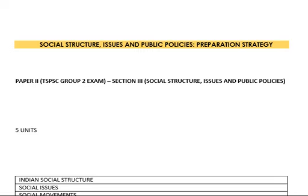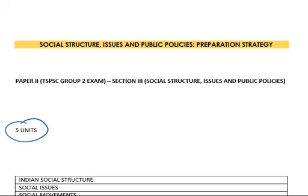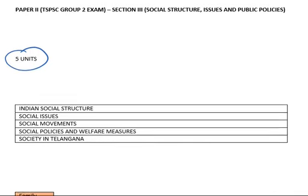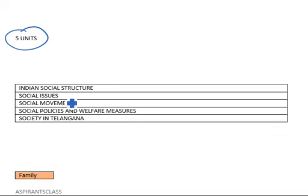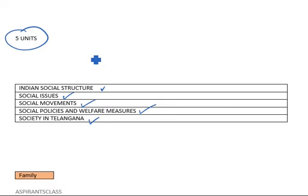First let us see the topics mentioned in the syllabus. There are five units: Unit 1 is Indian Social Structure, Unit 2 is Social Issues, Unit 3 is Social Movements, Unit 4 is Social Policies and Welfare Measures, and Unit 5 is Society in Telangana.